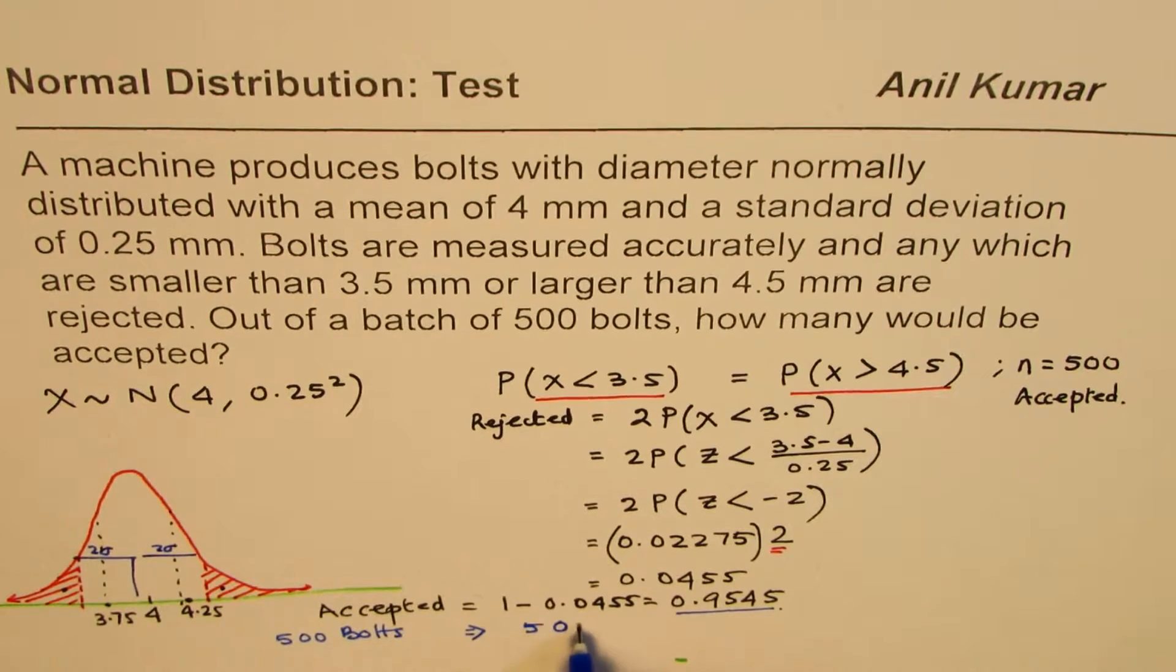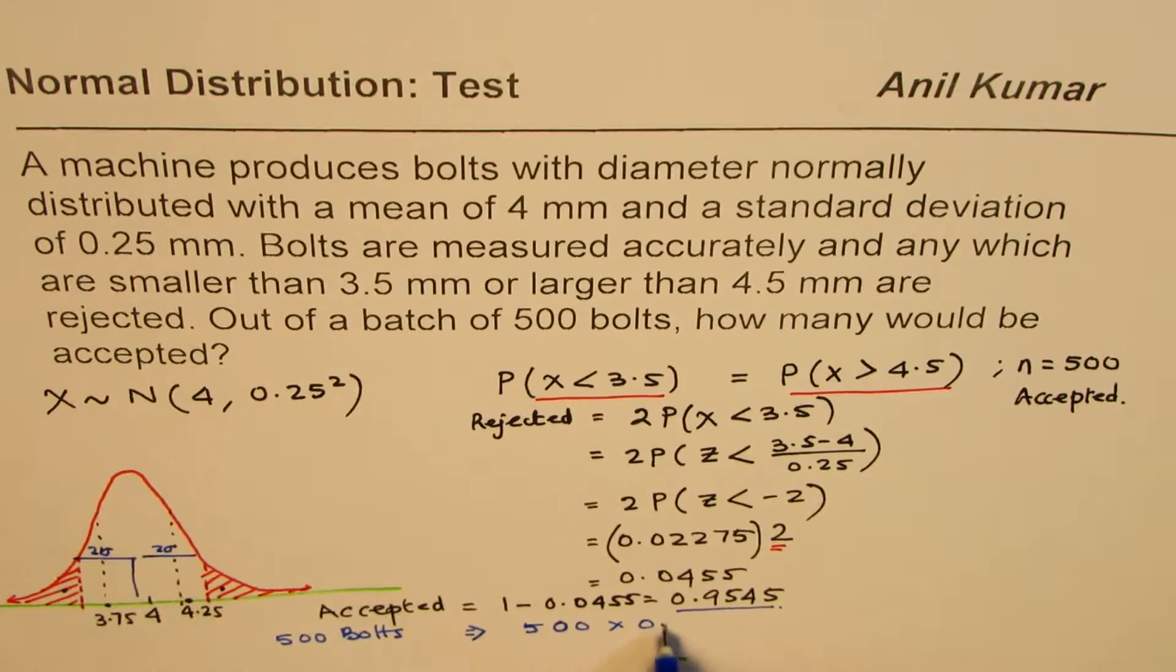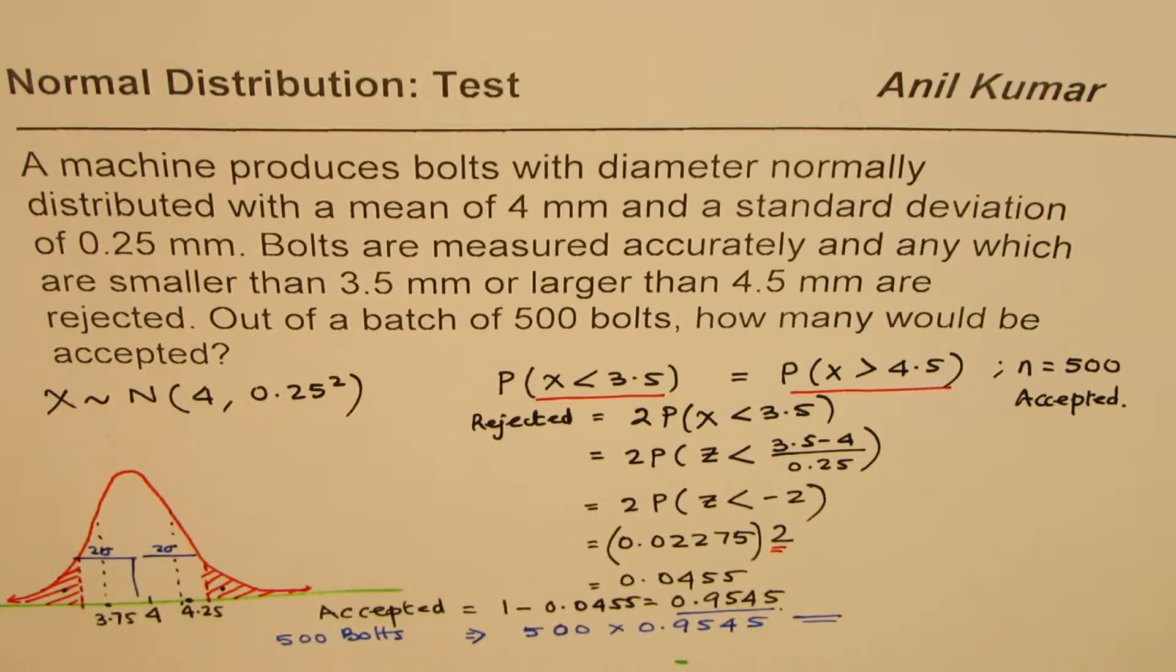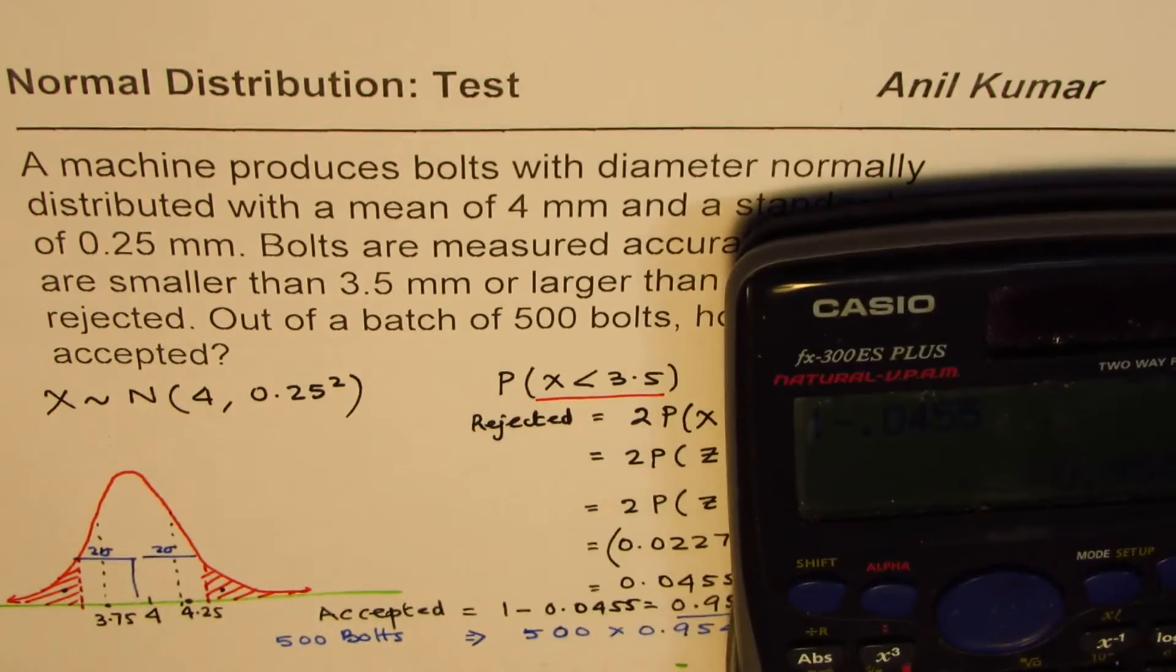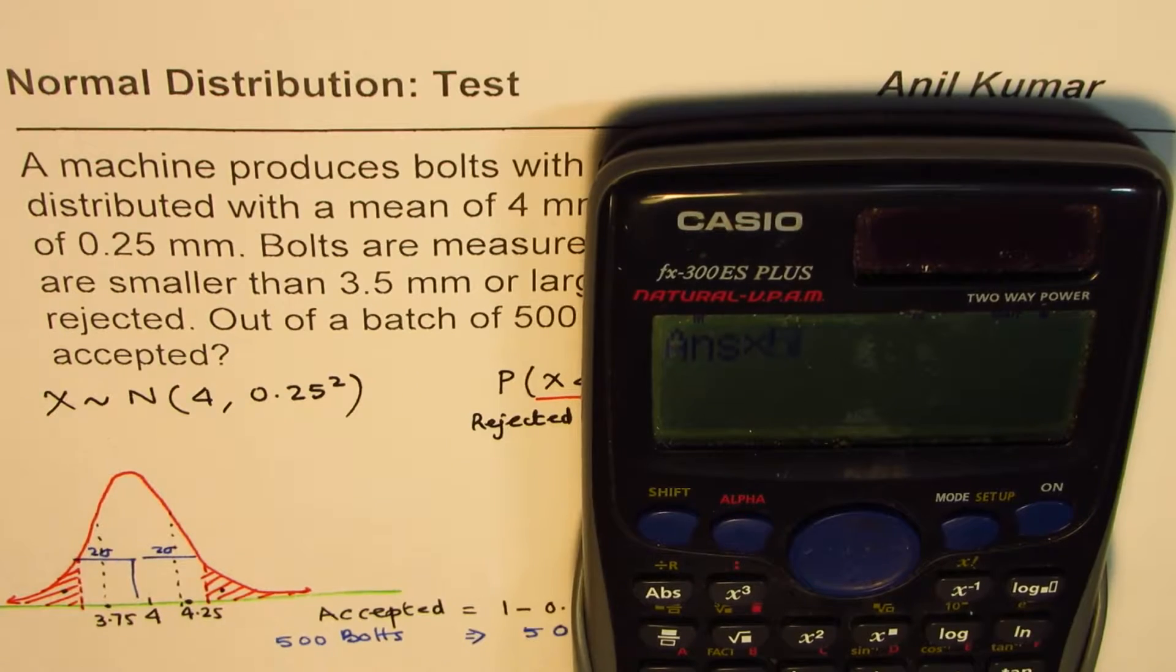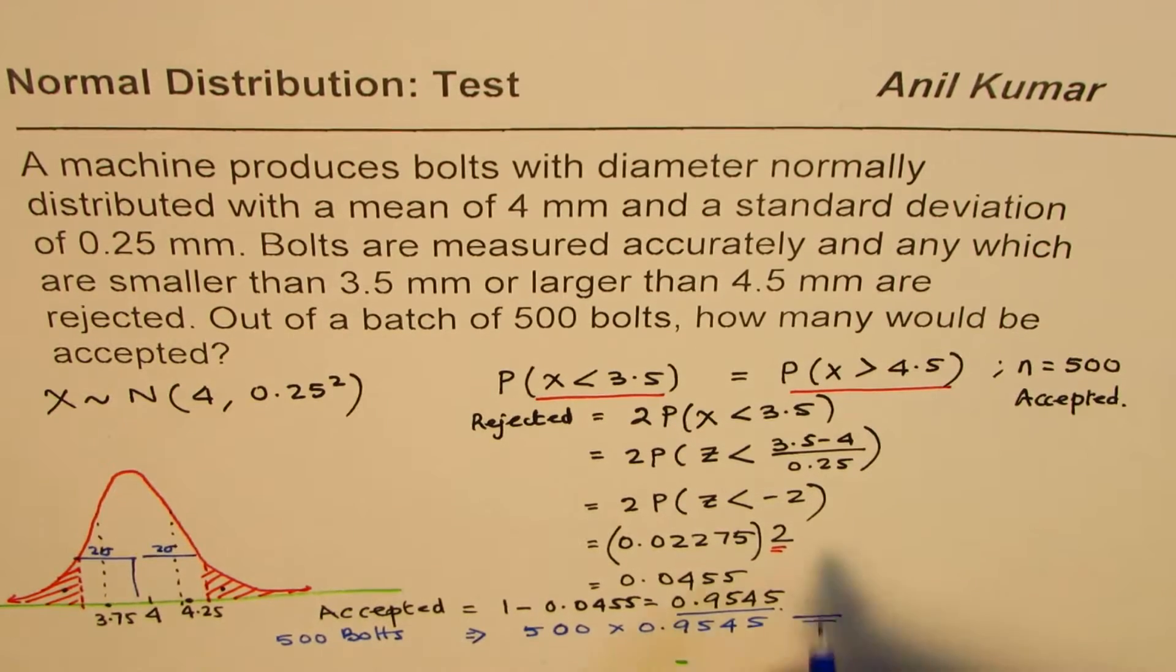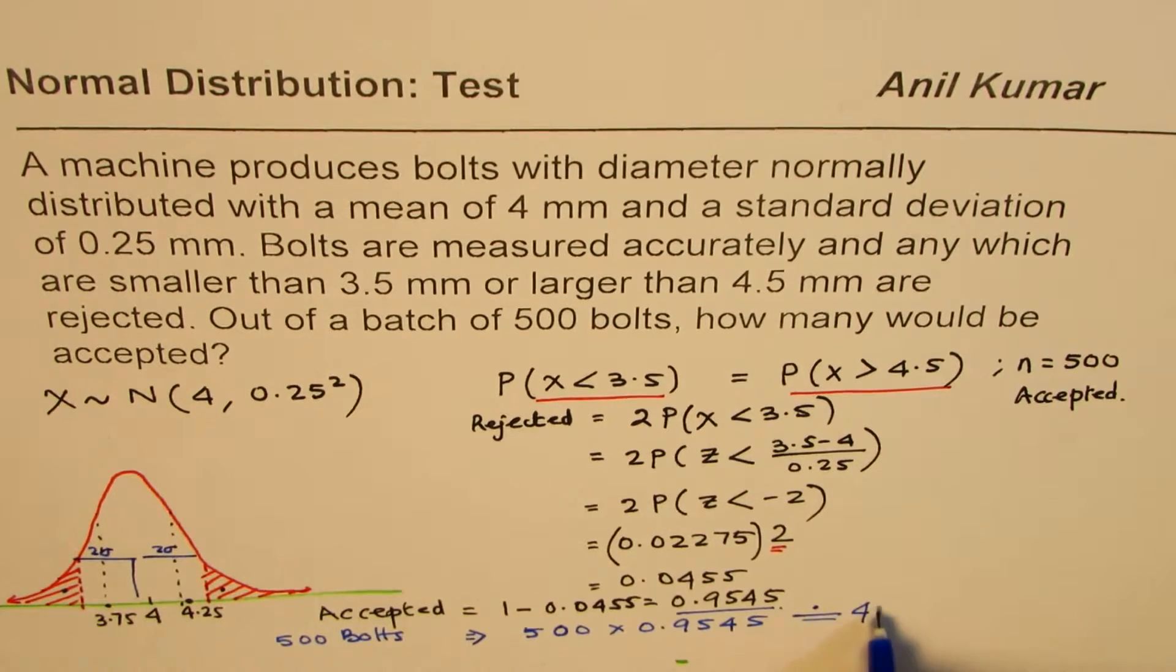So there will be 500 times 0.9545, so that will be the total number accepted out of 500. We already have the number here, we multiply by 500 to get it. It says 477.25.